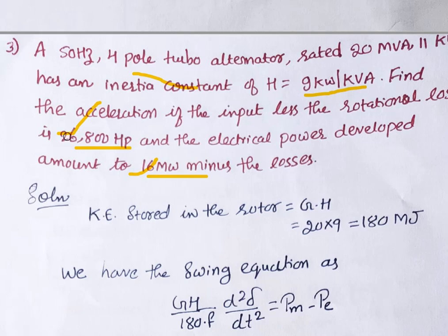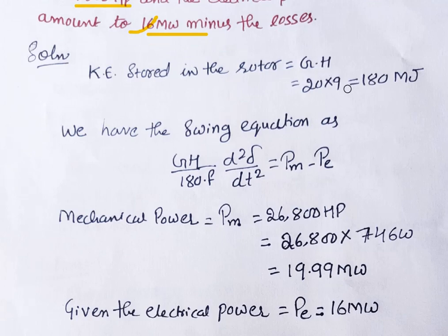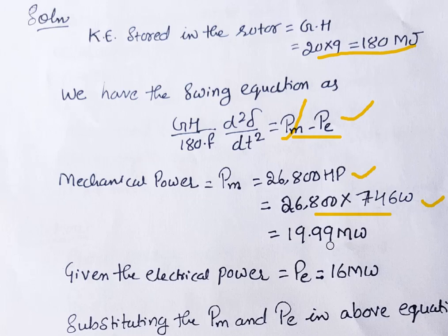The mechanical power is developed by the prime mover. The kinetic energy stored in the rotor equals G·H = 20 × 9 = 180 megajoules. We use the swing equation: G·H / (180 × F) × d²δ/dt² = P_m − P_e. P_e is given directly as 16 MW. P_m is given in HP, so converting: 26,800 HP × 746 watts per HP, divided by 10⁶, gives 19.99 MW ≈ 20 MW.